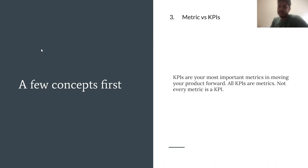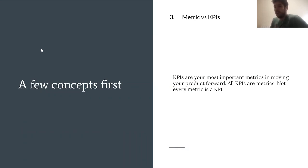The final term, which is a controversial one in my experience: what is the difference between a metric and a KPI? The word that explains everything is the K — the key. KPIs are your most important metrics in moving your product forward. All KPIs are metrics, but not all metrics are KPIs. We tend to confuse this a lot, and it becomes really confusing when you're trying to sell the idea of defining KPIs to your leadership, because when you have a bunch of metrics without a way of prioritizing which are most important, there's too much confusion.